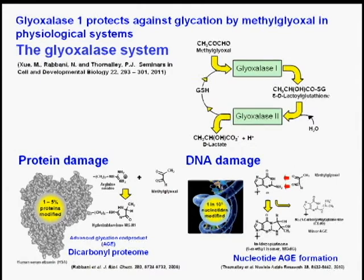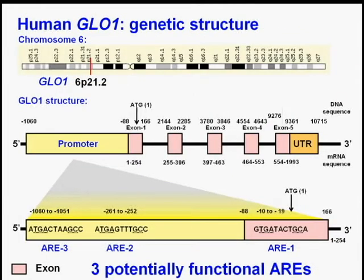The structure of the gene of human glyoxalase 1 is shown in this slide. The gene for human glyoxalase 1, GLO1, is at locus 6p21.2. The structure of the gene consists of five exons and the promoter region.